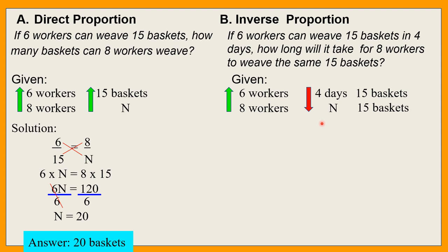Meron siyang pangatlong factor na hindi nagbabago. So sa problem na ito, ang hindi nagbabago ay yung 15 baskets. 15 baskets pa rin ang gagawin. Kaya lang dumame yung workers, eh di mas lalong mabilis na. So hindi na ito 4 days — hindi dapat aabot ng 4 days.